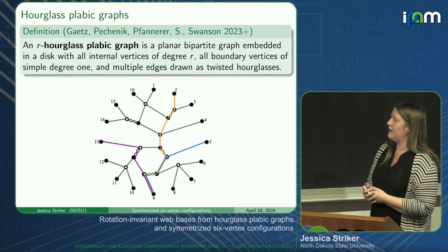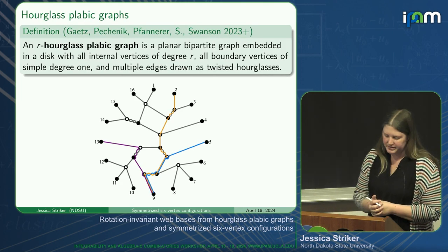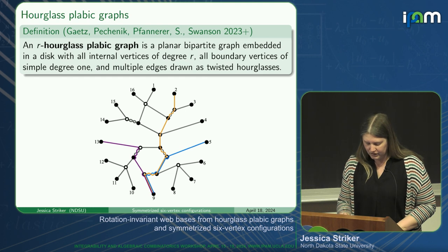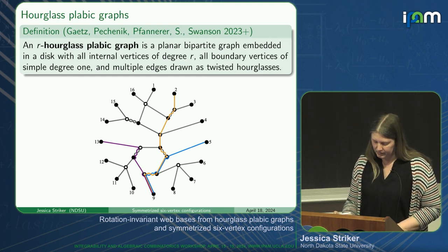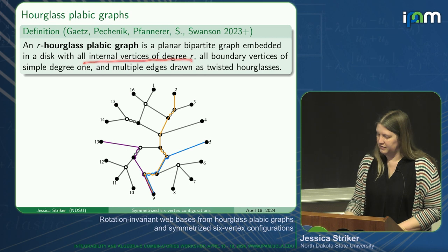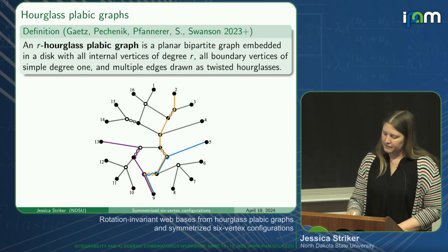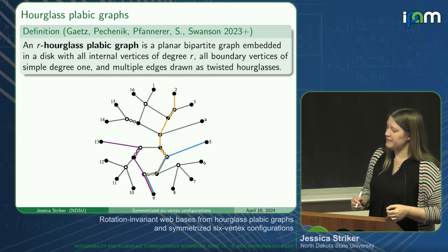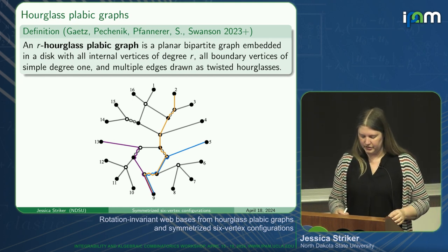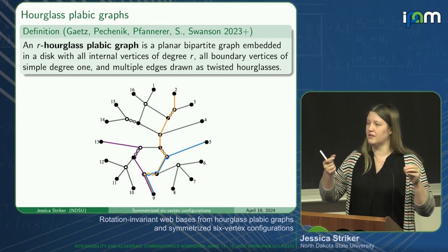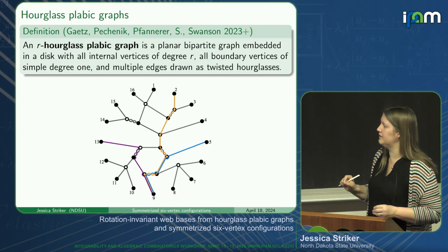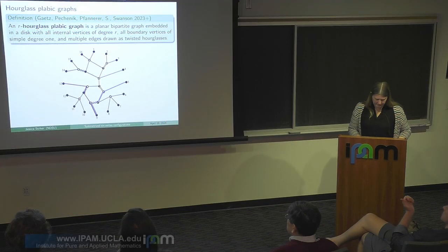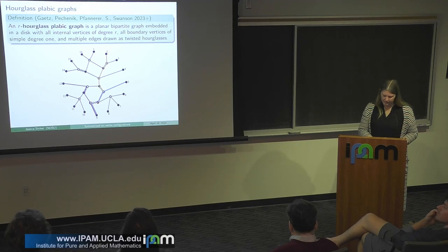Here's our definition of hourglass plabic graphs using a parameter R. It's a plabic graph with a few extra requirements: all internal vertices are of degree R, all boundary vertices are of simple degree one, and whenever you have a multiple edge between two vertices, we draw it with a little twist—an hourglass—for reasons I'll explain later in the talk.